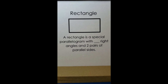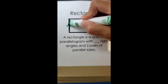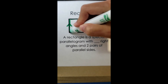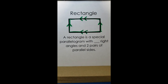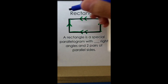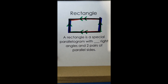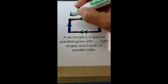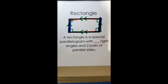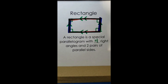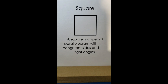A rectangle is a special parallelogram with four right angles and two pairs of parallel sides. Looking at it, the opposite sides are parallel and congruent. All four corners form right angles, giving us four right angles total. That's what makes it a rectangle.